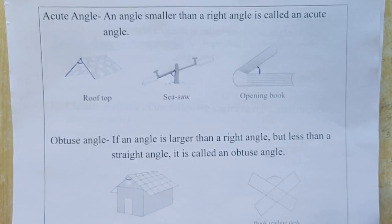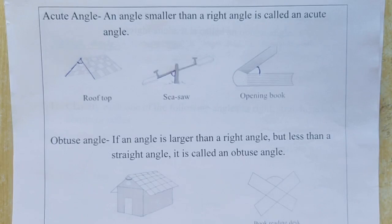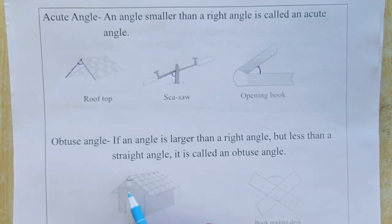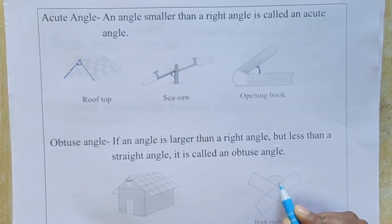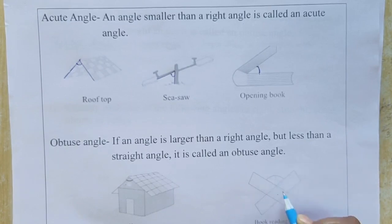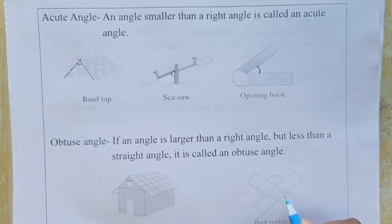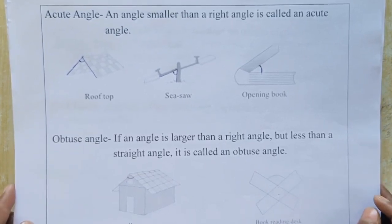An obtuse angle is greater than 90 degrees and less than 180 degrees — you can say it starts from 91 degrees and goes up to 179 degrees. The angles shown here are examples of obtuse angles because they are greater than 90 degrees and less than 180 degrees.